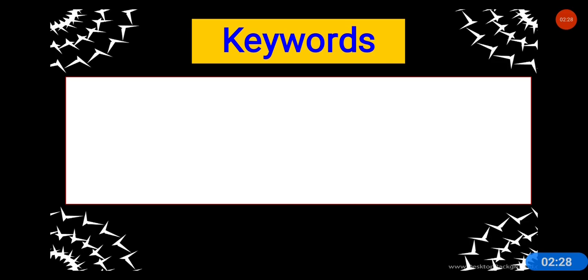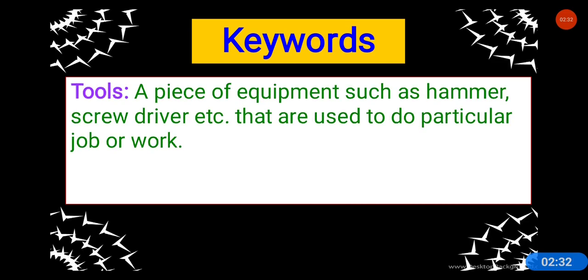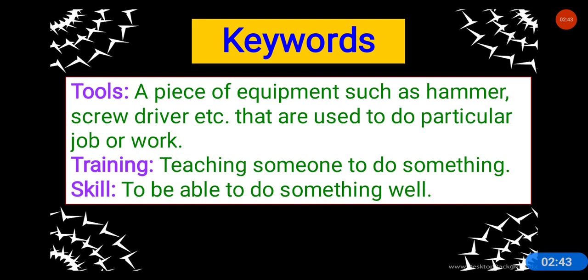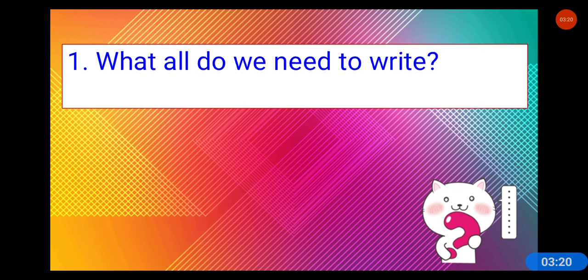Today we are going to see different things in lesson plan 2. These are the keywords you will find in this lesson: tools, training, and skill. Tools means a piece of equipment — such as a hammer or screwdriver — used to do a particular job. Training means teaching someone to do something. Skill means to be able to do something well. Keep these keywords in mind as we go further.